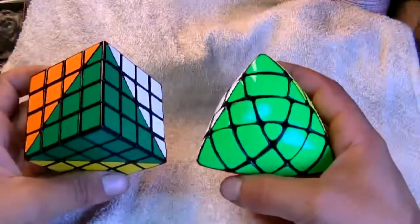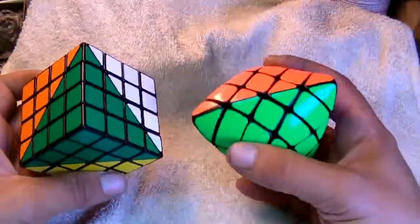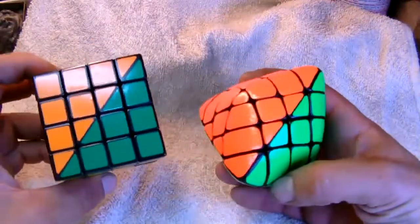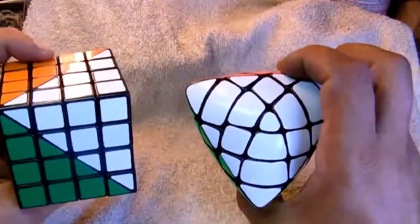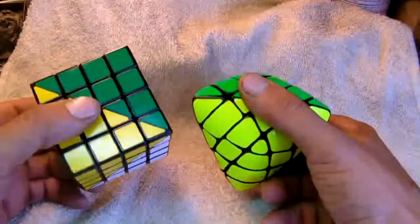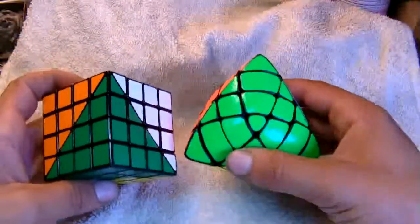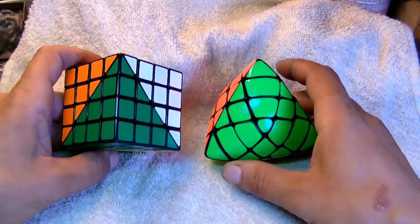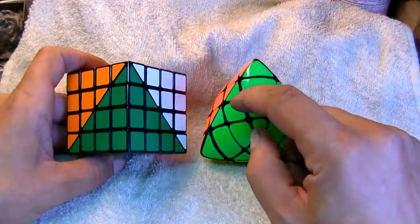As you can see here, this is the green face, let's align it like that. This is the green face with the orange next to it and the white on the other side and the yellow on the bottom. So if we compare the two puzzles side by side,